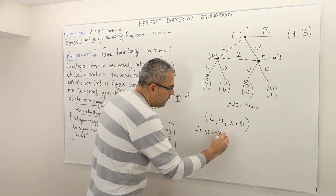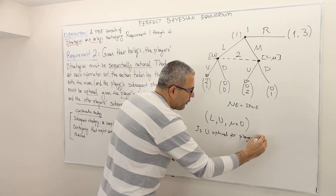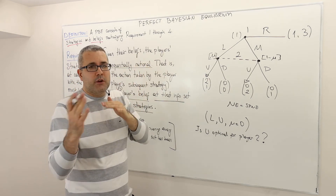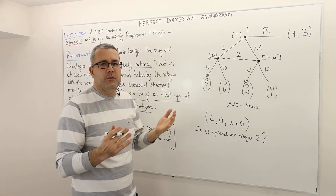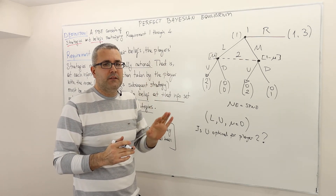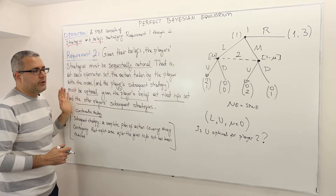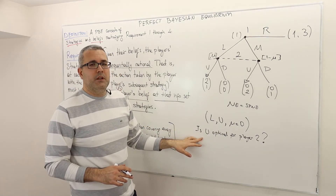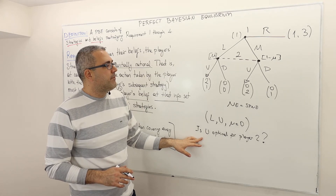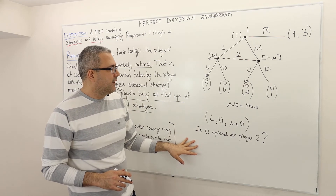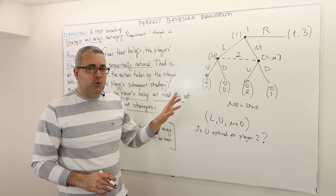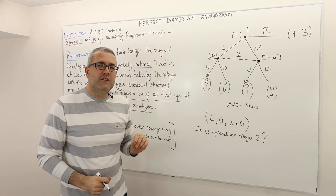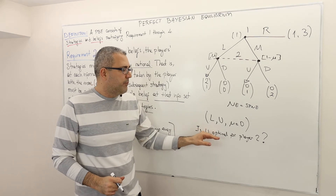Is U optimal for player two? I wish we were doing this face-to-face so I could ask you directly. Pause for a minute and think about requirement two and try to answer. You will probably say yes, it is optimal. Well, for this game, unfortunately, it is optimal. But let me change the payoffs and try to answer exactly the same question again: is U optimal for player two?